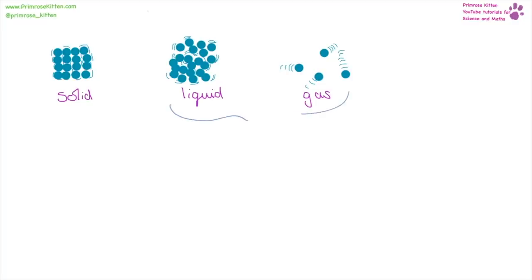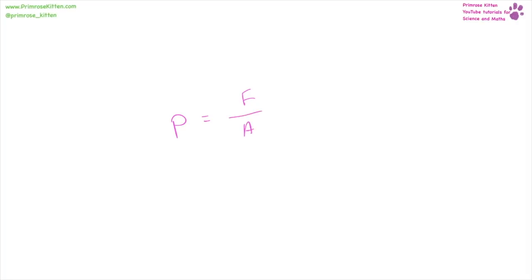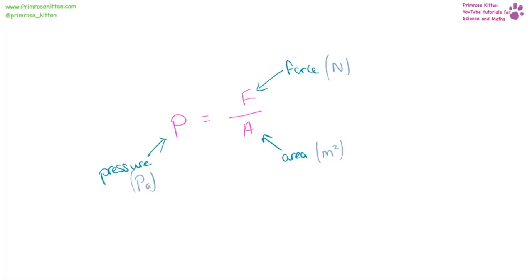A fluid can either be a liquid or a gas. Liquids are incompressible, whereas gases are compressible. Pressure equals force over area. The units for pressure are pascals, for force it is newtons, and for area it is metres squared. I've seen exam questions which use newtons per metre squared for pressure — if they do that, give your answer in the same format. I've also seen questions with newtons per centimetre squared, so if the question is in that format, give your answer in that format.